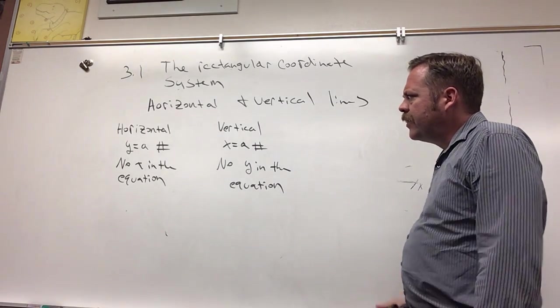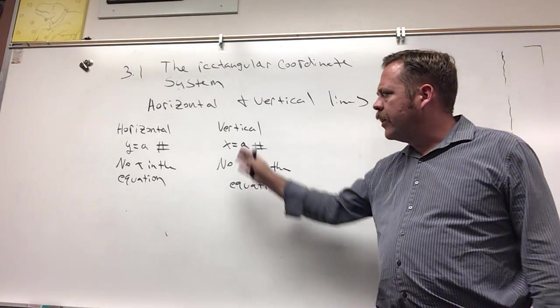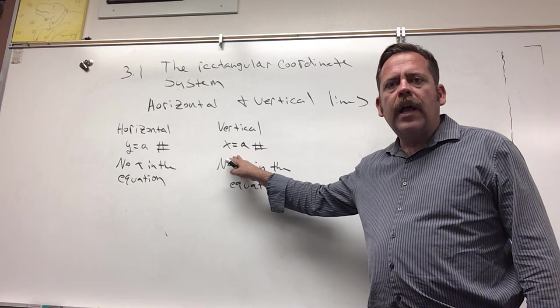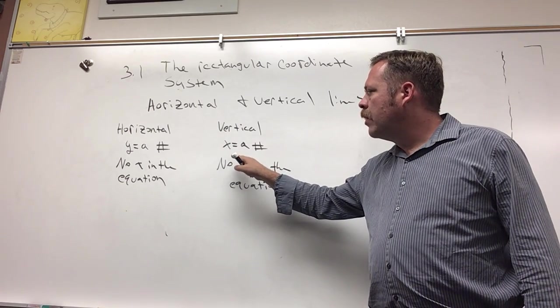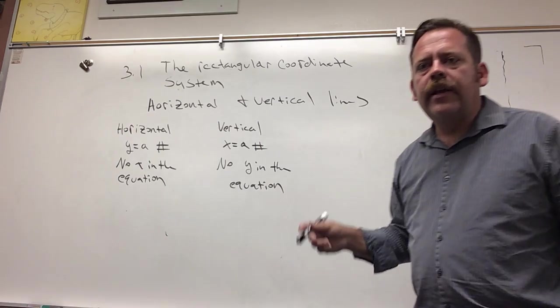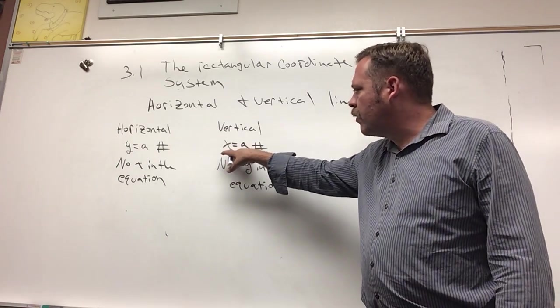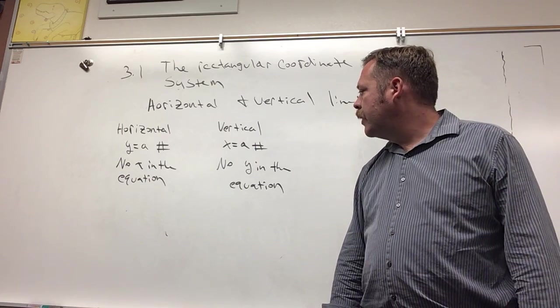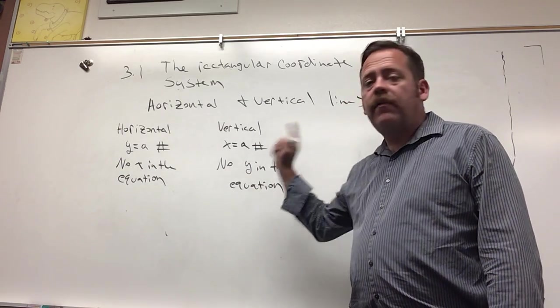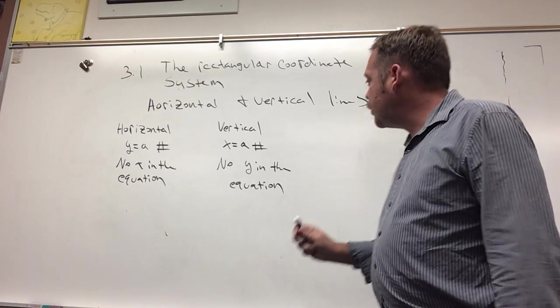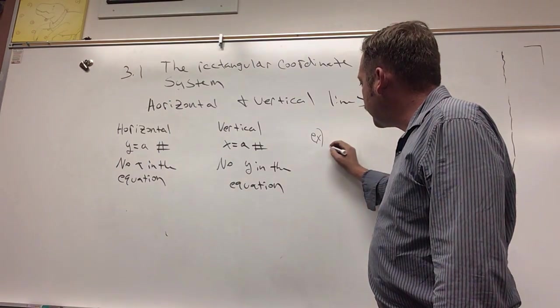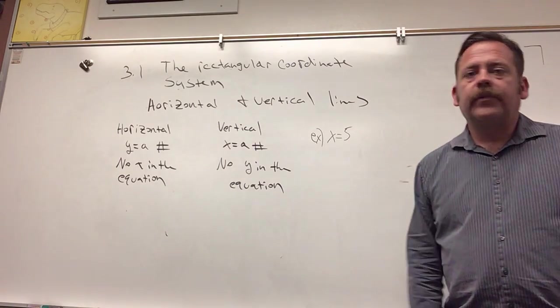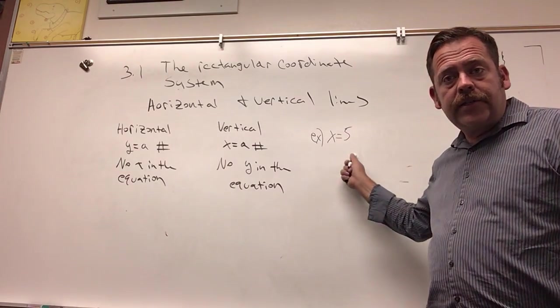But alternatively, a vertical line is always x equals a number, and you're never going to see a y in the equation of a vertical line. There's going to be no y in the equation of a vertical line. So let's take a look at that - x equals 5. Well, notice how there's no y in this equation.